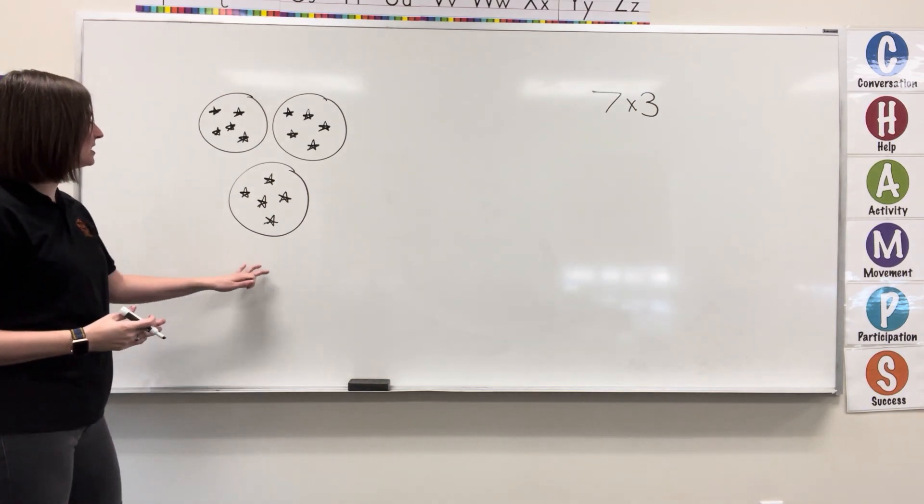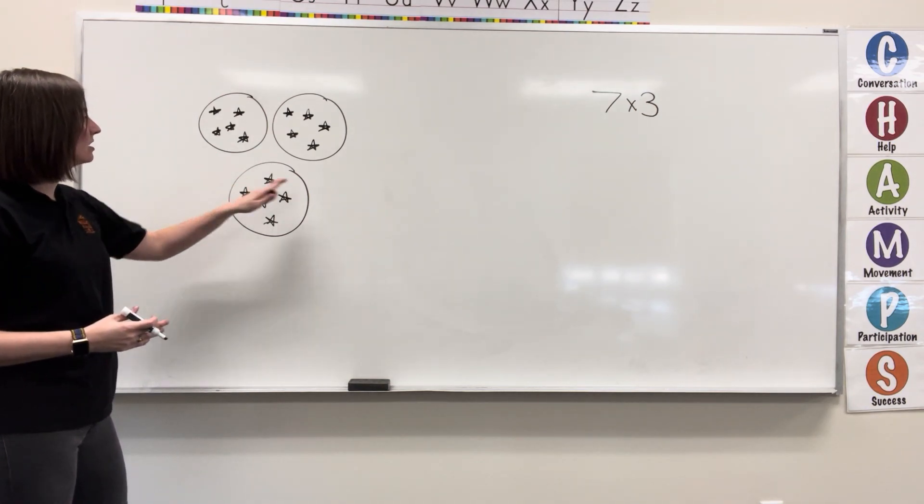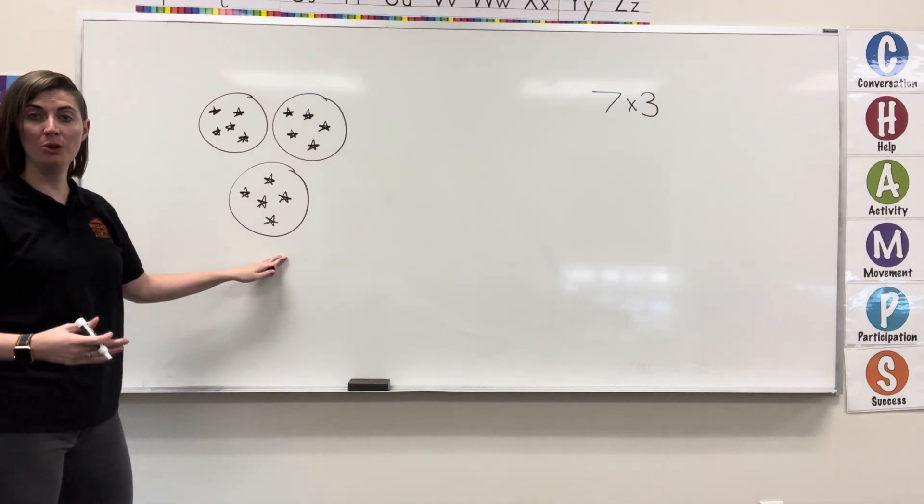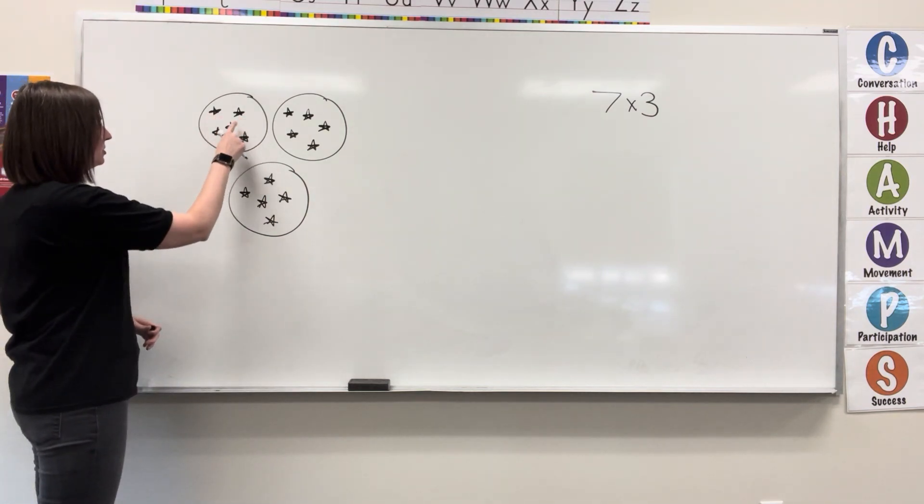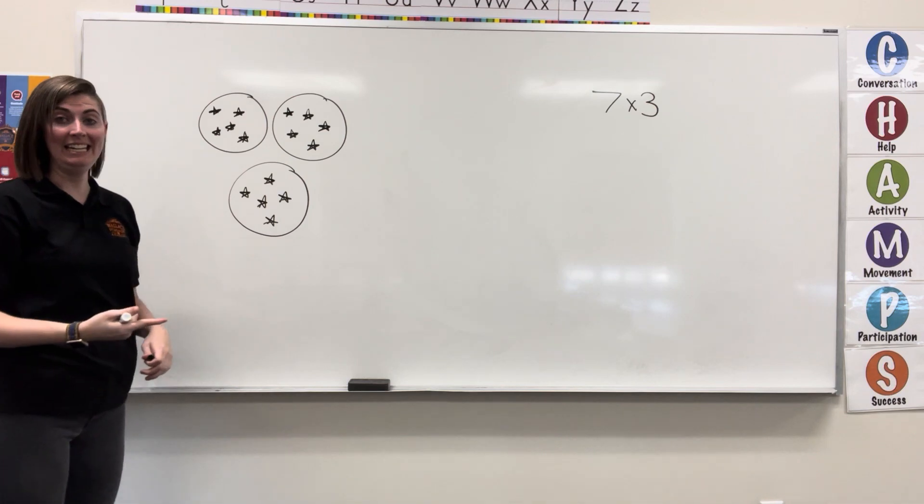So, my first example, I have one, two, three groups, and each group has one, two, three, four, five in it.